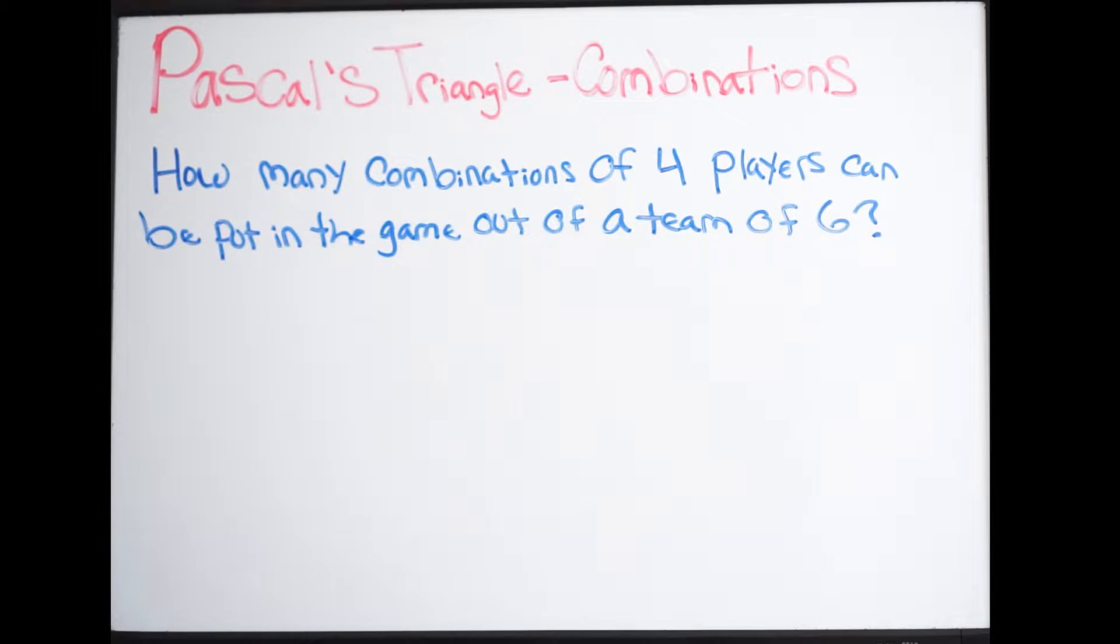We can use Pascal's triangle to do these combination problems because the binomial coefficient formula comes from Pascal's triangle. So by using Pascal's triangle you're going right to the source. You could do these two ways: you could use the binomial coefficient formula which actually comes from Pascal's triangle, or you could just straight up use Pascal's triangle and that's what we're going to do here.